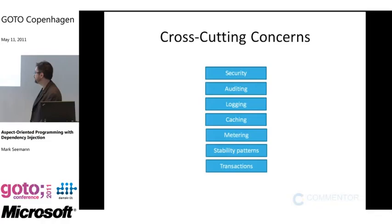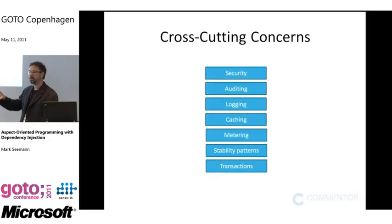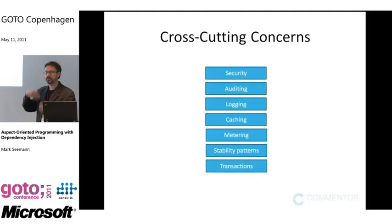An aspect is just another word for a cross-cutting concern — that's why we talk about cross-cutting concerns when we talk about aspect-oriented programming. I just want to point out that I started with layered architecture as a familiar starting point, but cross-cutting concerns definitely apply to a wider range of architectural styles.